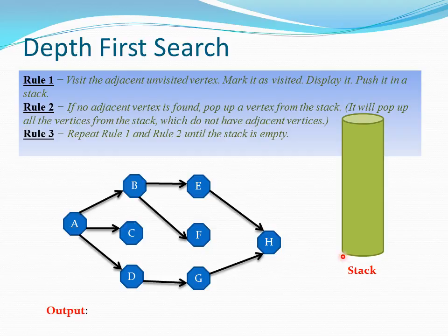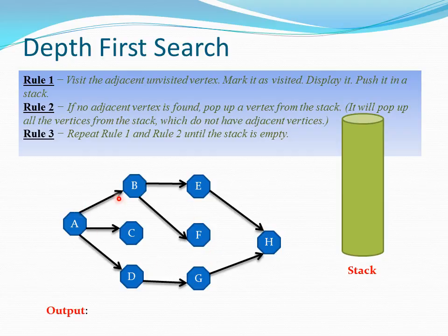Rule three: repeat rule one and rule two until the stack is empty. Now let us apply these three rules on this graph and visualize how it looks. In this graph, vertices are represented in blue, meaning unvisited. This is a directed graph — we can see the edges directing to certain nodes.